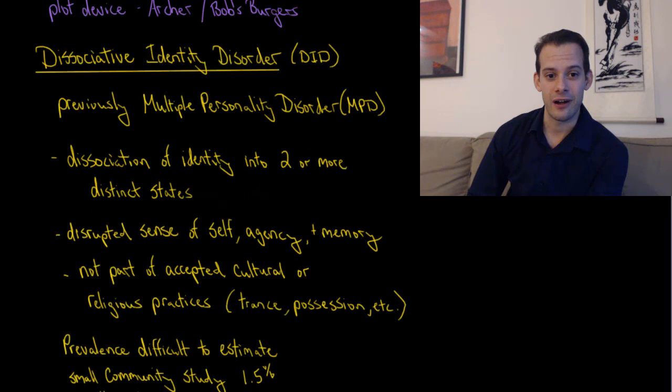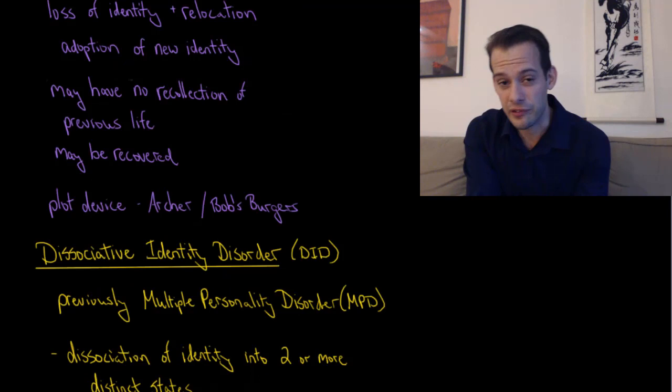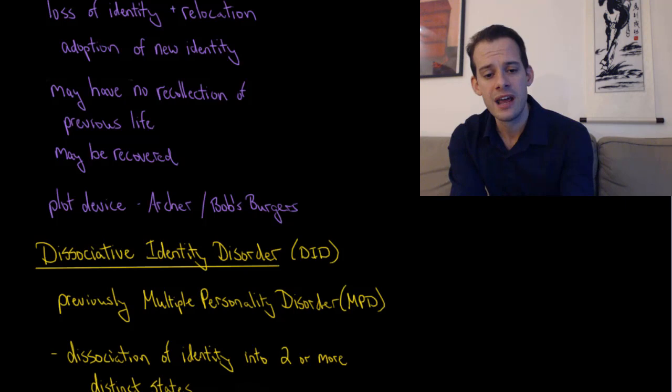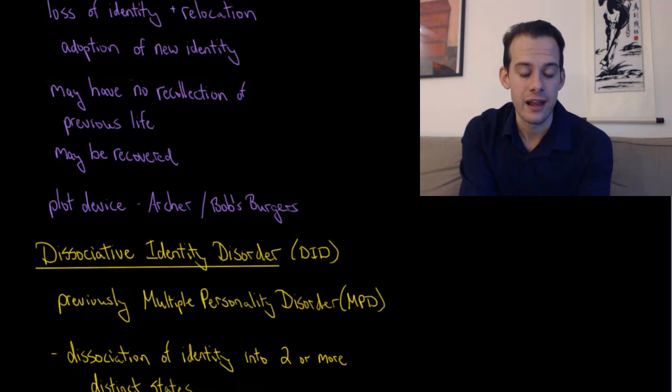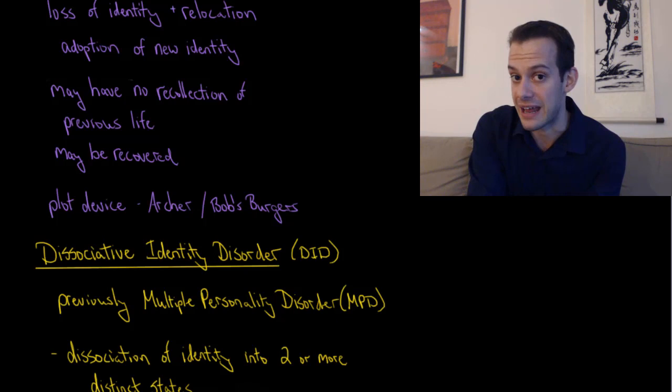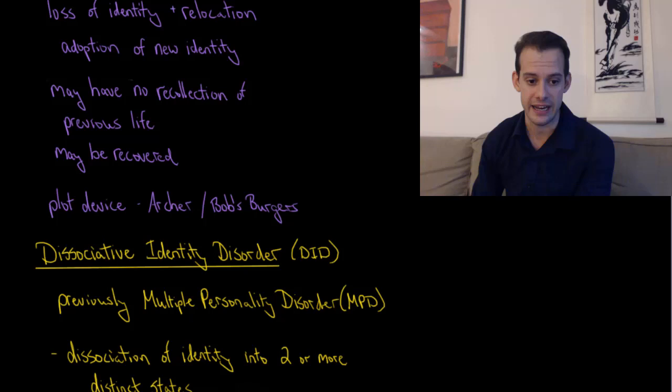So let's move to our next disorder which is dissociative identity disorder. This is a controversial diagnosis and was previously known as multiple personality disorder. The reason it's no longer called multiple personality disorder is the separation is meant to refer more to identity rather than personality. It would be possible to have multiple identities that have very similar personality traits. We have a dissociation of identity into two or more distinct states.